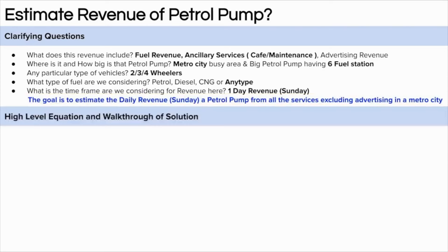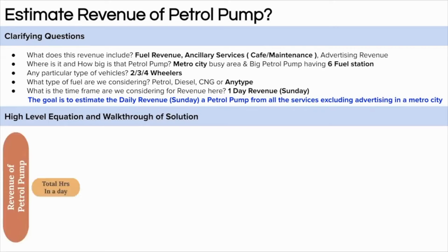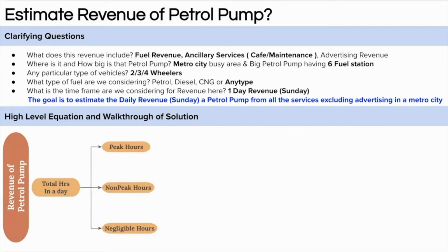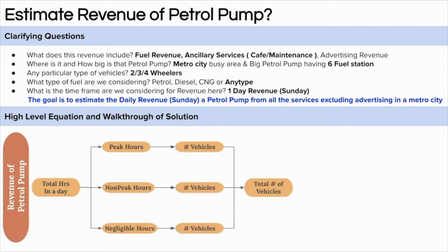Since we are calculating daily revenue from a petrol pump, we start with 24 hours in a day, bifurcating into peak hours, non-peak hours, and negligible hours. We calculate the total number of vehicles visiting in each period. Adding them gives the total number of vehicles visiting a petrol pump in a day. Not all vehicles will be two-wheelers or four-wheelers, so we calculate revenue from each category separately, plus ancillary services.